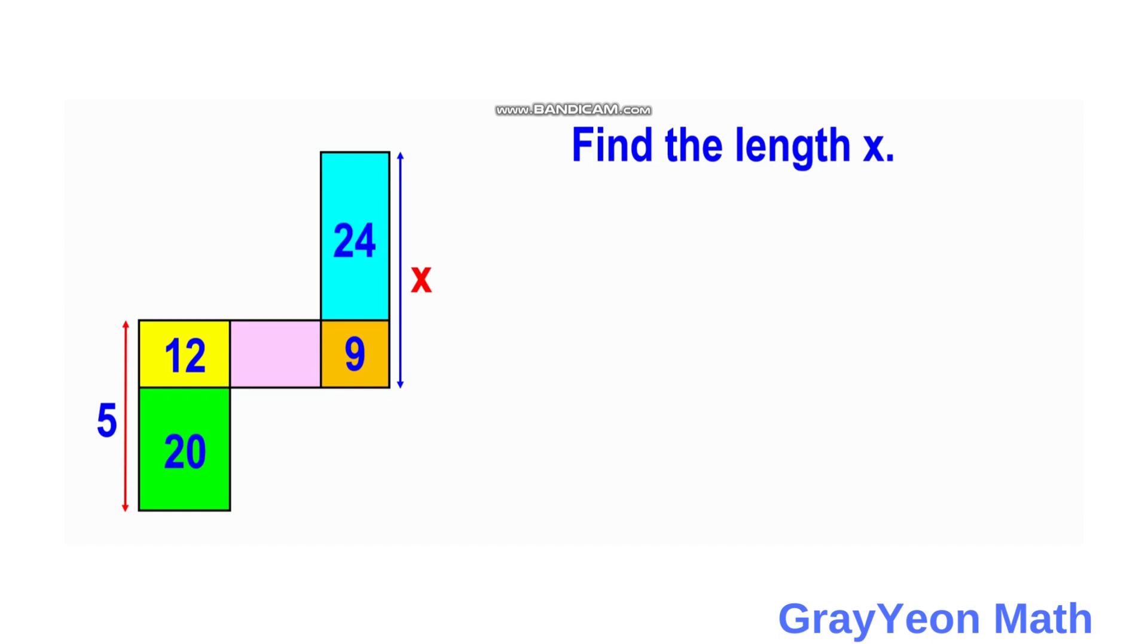So first thing that we have to do is we need to notice that we focus on this yellow and green rectangles. We notice that they have the same length, this length, so let us label this as L1. L1 is actually the same for both.